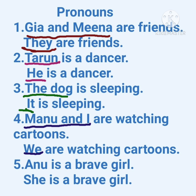Now let's move to the fifth one: Anu is a brave girl. Anu is a name of a girl, so which pronoun must we use for a girl or woman, children? Yeah, you are right — it's 'she.' We must replace the naming word Anu with the pronoun 'she,' so we must say: she is a brave girl. Have you understood, children? I hope you understood how to use pronouns in a sentence.